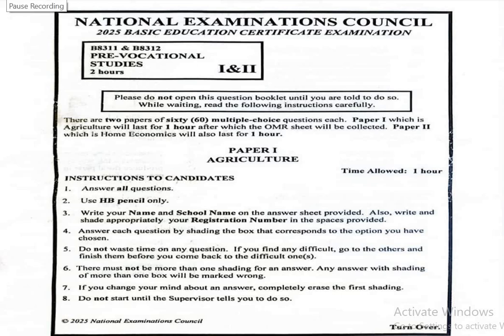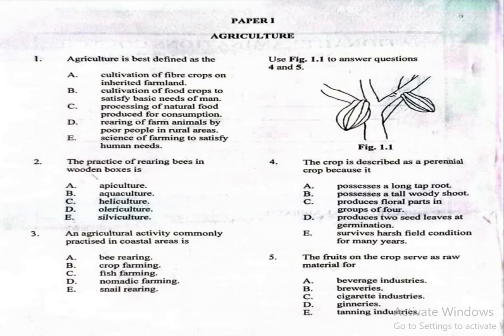Hello guys, you are welcome to today's lesson. We'll be looking at Pre-Vocational Studies, Paper 1, Agriculture. Don't forget, this is 2025 Basic Education Certificate Examination. Now, let's go straight to Paper 1, which is Agriculture.